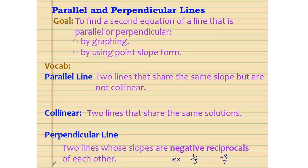A parallel line is when two lines share the same slope. Collinear means two lines that share the same solutions. A perpendicular line is when the slopes of two lines are negative reciprocals of each other.